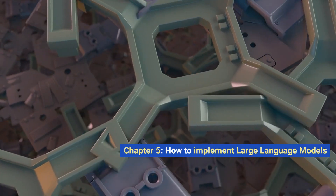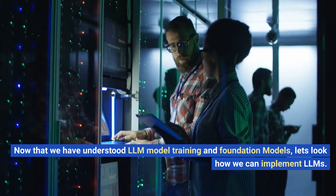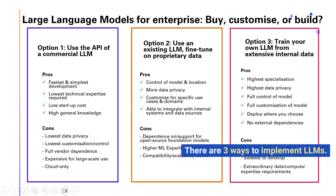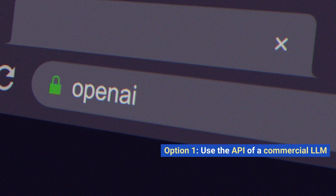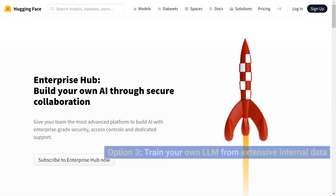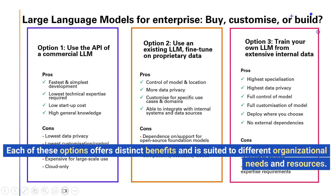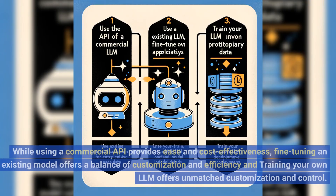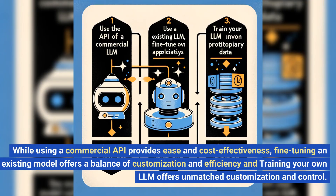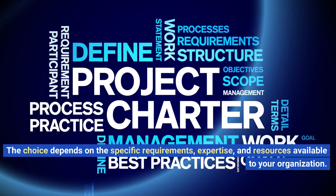Chapter 5: How to Implement Large Language Models. Now that we understand LLM model training and foundation models, let's look at how we can implement LLMs. There are three ways: Option 1 — use the API of a commercial LLM; Option 2 — use an existing LLM and fine-tune on proprietary data; Option 3 — train your own LLM from extensive internal data. Each option offers distinct benefits suited to different organizational needs. Using a commercial API provides ease and cost-effectiveness, fine-tuning offers a balance of customization and efficiency, and training your own LLM offers unmatched customization and control.